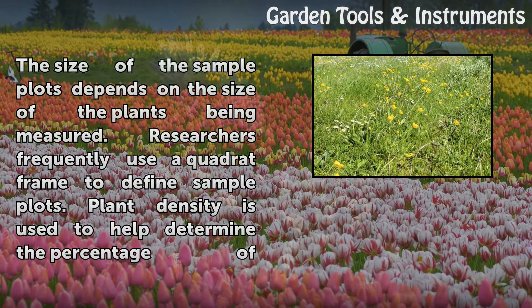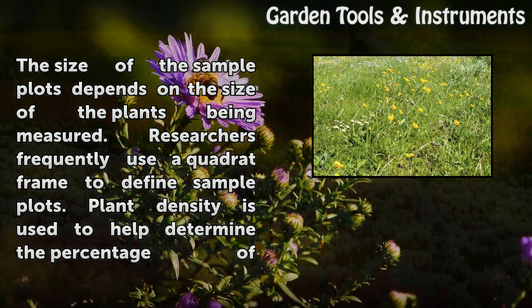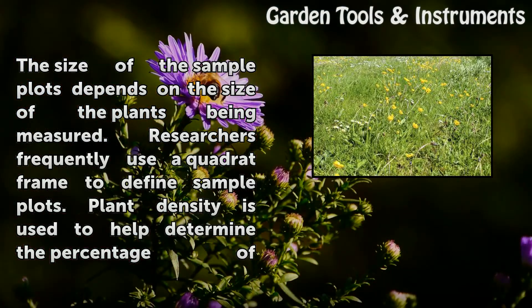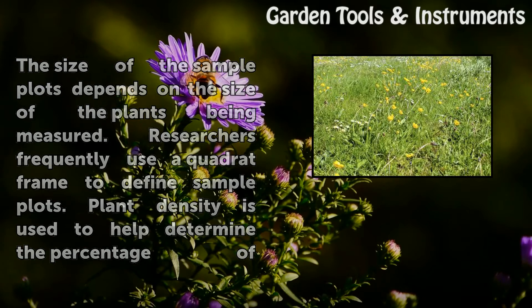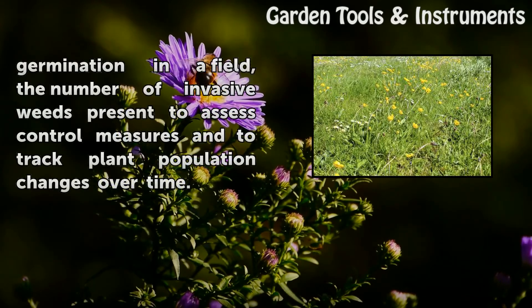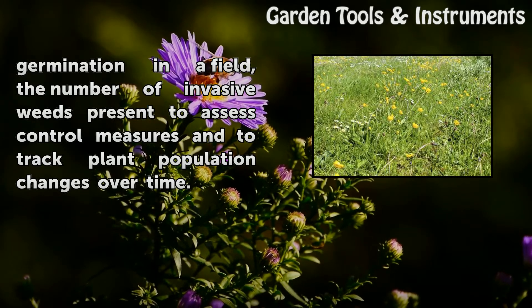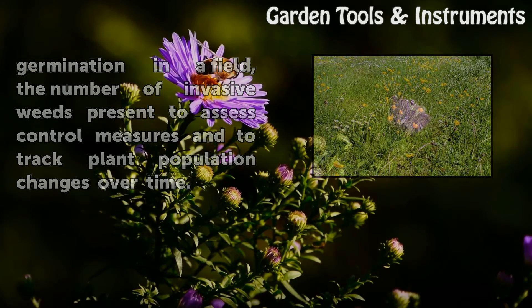The size of the sample plots depends on the size of the plants being measured. Researchers frequently use a quadrat frame to define sample plots. Plant density is used to help determine the percentage of germination in a field, the number of invasive weeds present to assess control measures, and to track plant population changes over time.